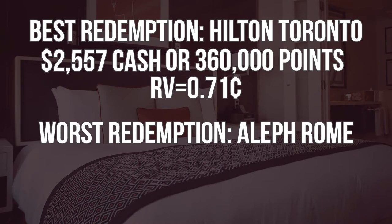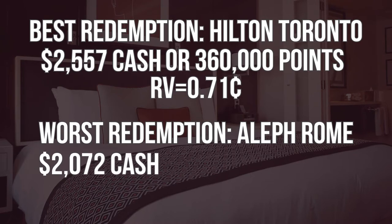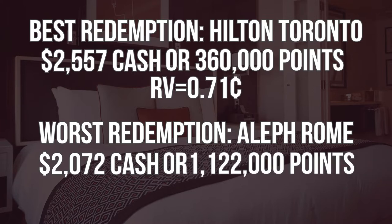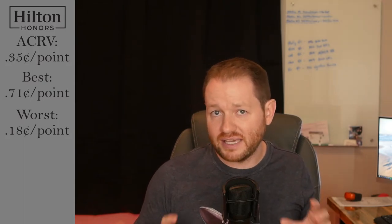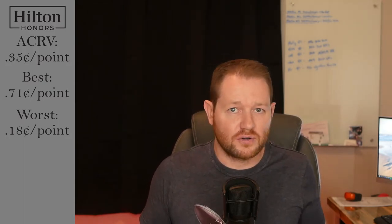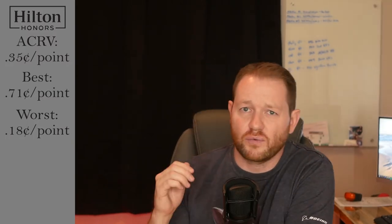Our worst redemption comes from the Aleph Rome. A week here was advertised at $2,072. The award price — get this — 1,122,000 points. That works out to a value of just .18 cents each. That's a bigger rip-off than pay-per-view porn at a hotel that also has Wi-Fi. Seeing that made me wonder how dumb the folks managing the Hilton Honors program think the traveling public is. But then again, I have witnessed herds of people taking time out of their day to wait in line at Costco for a free sample of beef jerky about the size of one's thumbnail.